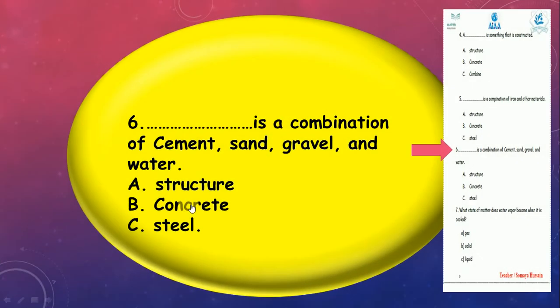Number 6: What is a combination of cement, sand, gravel, and water? Who can tell me? Cement, sand, gravel, and water? It's structure, concrete, or steel? Concrete, good job.